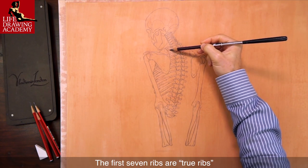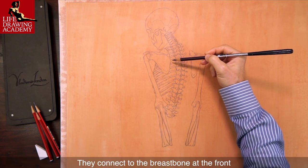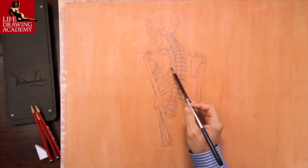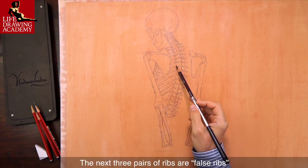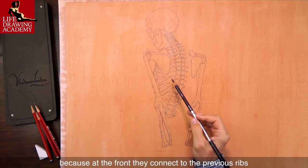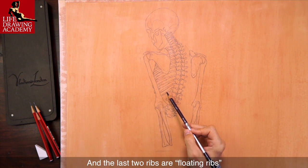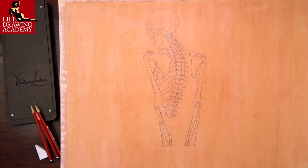The first seven ribs are true ribs — they connect to the breastbone at the front. The next three pairs of ribs are false ribs, because at the front they connect to the previous ribs. And the last two ribs are floating ribs, because they are connected only to the spine.